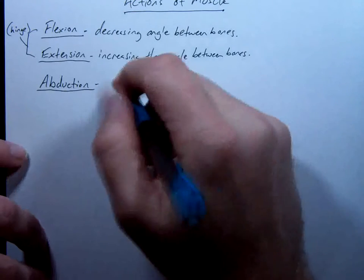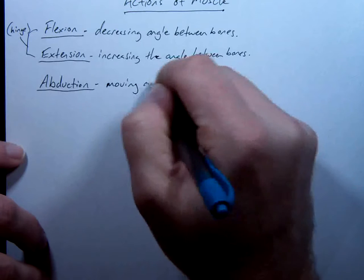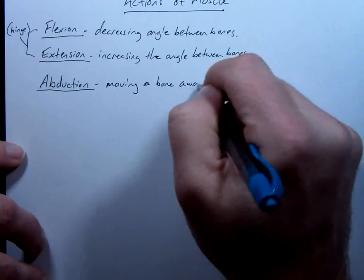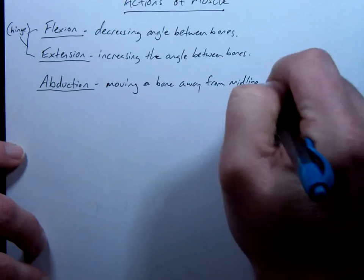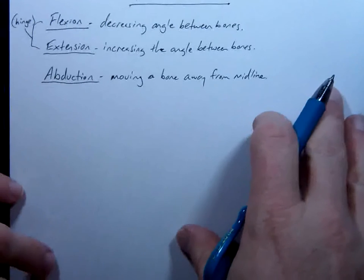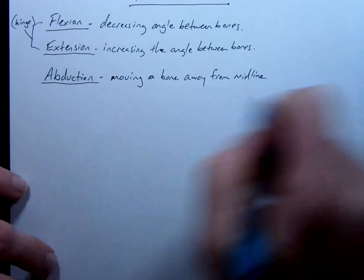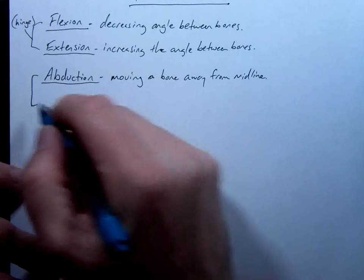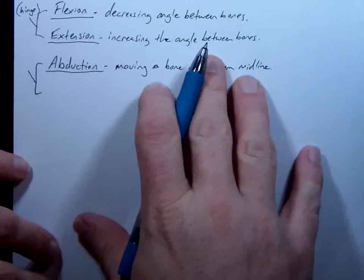Abduction is moving a bone away from the midline. Remember that imaginary midline that goes to the center of the body that would bisect the body on the sagittal plane. Moving away from that is abduction. So, these typically, these two movements that are opposite of one another would occur at what type of joint?